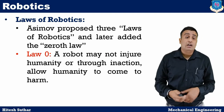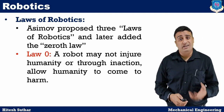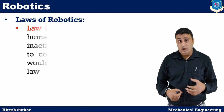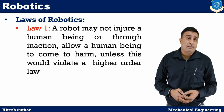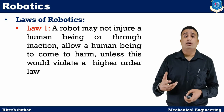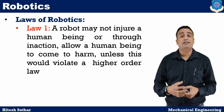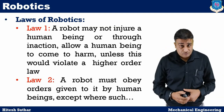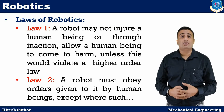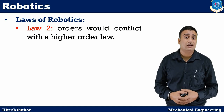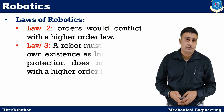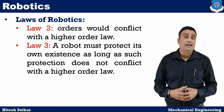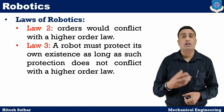Asimov also proposed three laws of robotics, and later he added the zeroth law also. Law Zero: a robot may not injure humanity, or through inaction, allow humanity to come to harm. Law One: a robot may not injure a human being, or through inaction, allow a human being to come to harm, unless this would violate a higher order law. Law Two: a robot must obey orders given to it by human beings, except where such orders would conflict with a higher order law. Law Three: a robot must protect its own existence as long as such protection does not conflict with a higher order law.